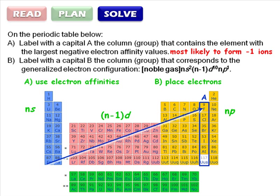Next in the generalized configuration, we have NS2, so we put one electron in each of the two S block columns. The N at the front means that we don't really care which row the electrons are in, just the column. 10 D electrons takes us all the way across the D block.